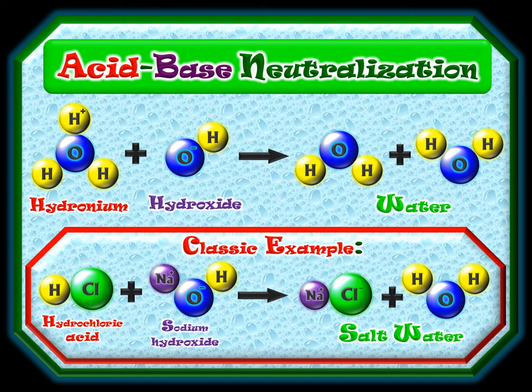The simplified way skips the dissociation step — going right from initial reactants to final products. Notice that the sodium chloride would not be intact in solution; it would only form solid salt if you evaporated the water. That's what happens when an ocean dries up — you're left with a big salt deposit, like at the bottom of the Mediterranean. These are really just different points of view on the same exact process.